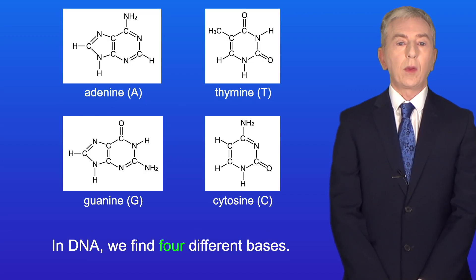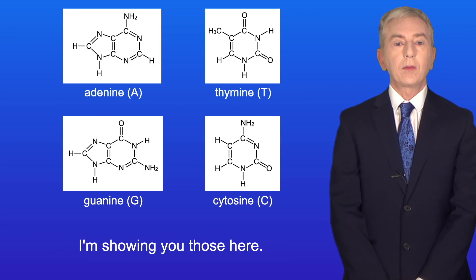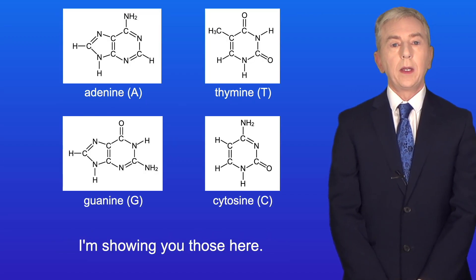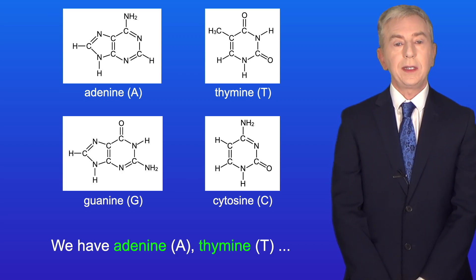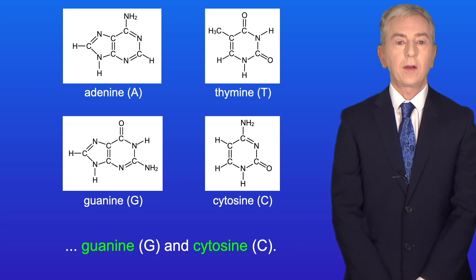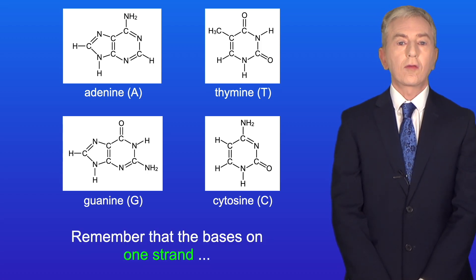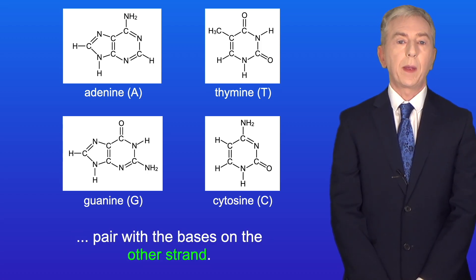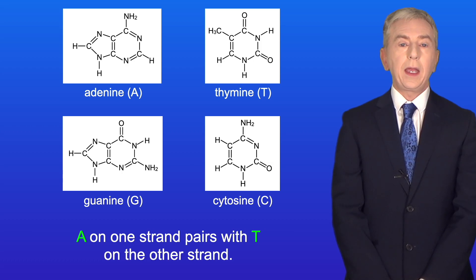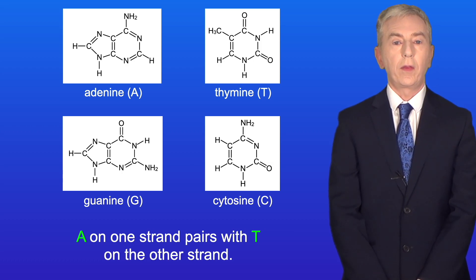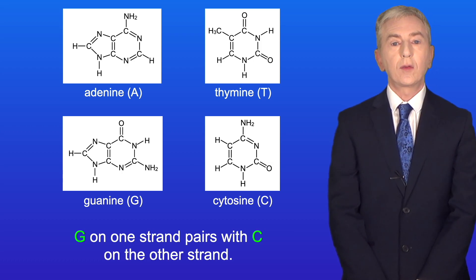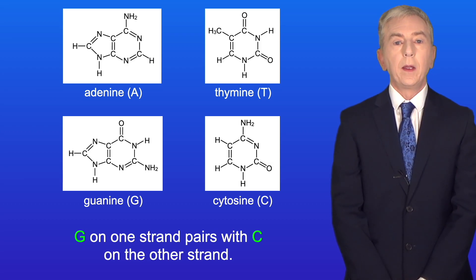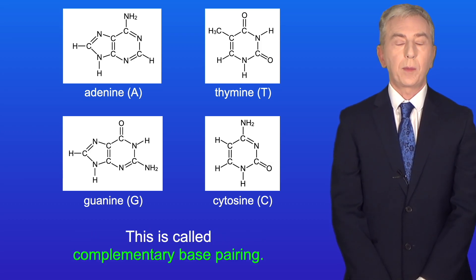In DNA we find four different bases: we have adenine or A, thymine or T, guanine or G, and cytosine or C. Remember that the bases on one strand pair with the bases on the other strand, so A on one strand pairs with T on the other strand, and G on one strand pairs with C on the other strand. This is called complementary base pairing.